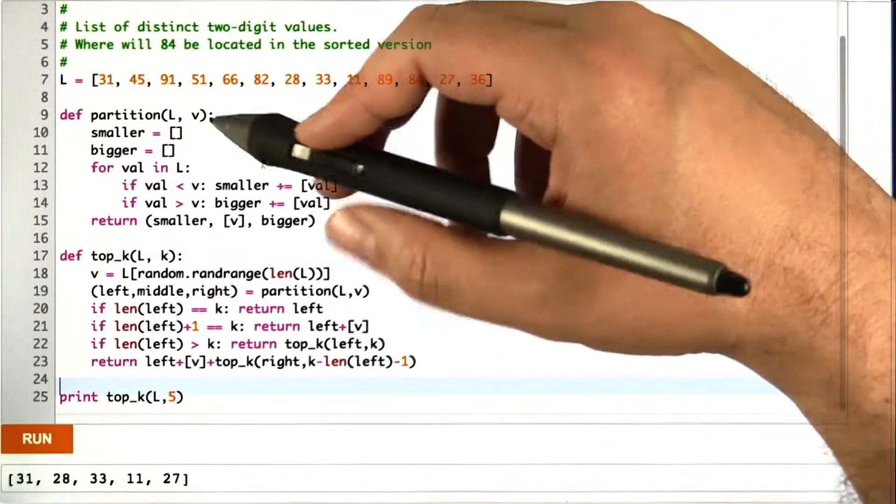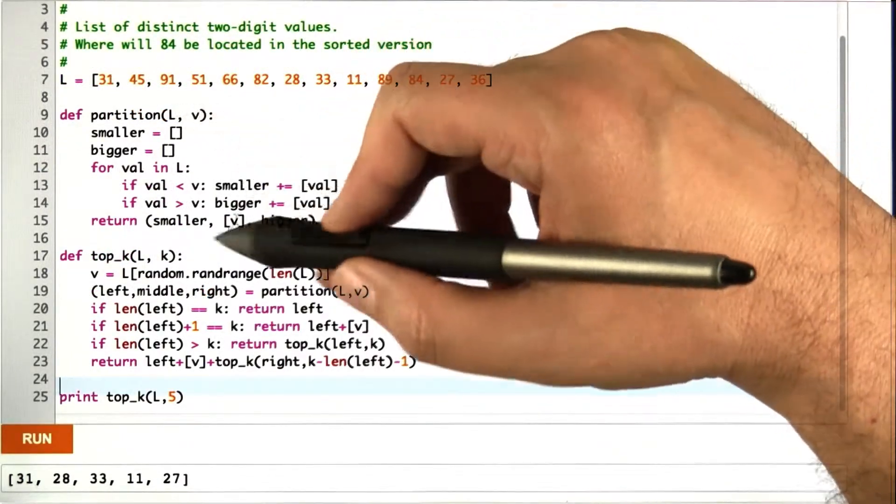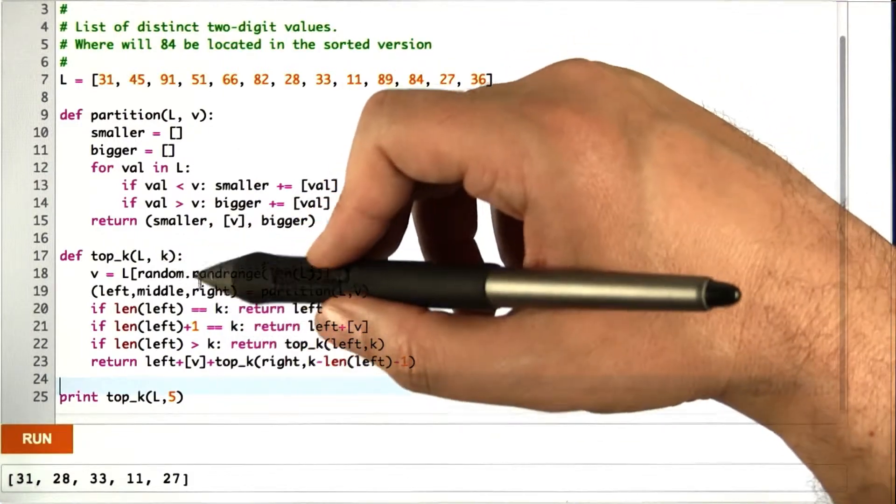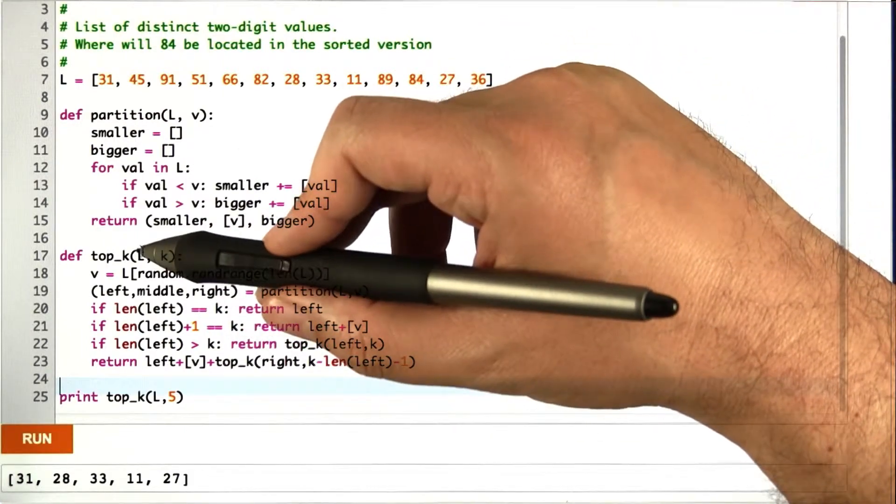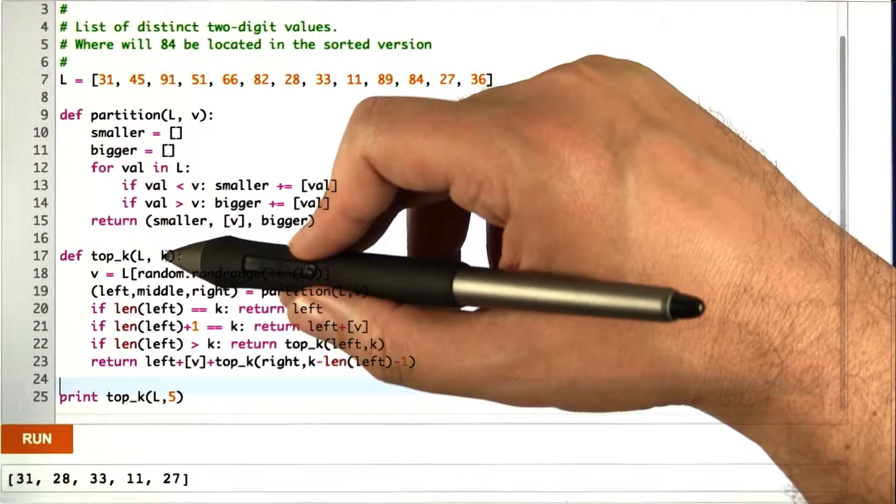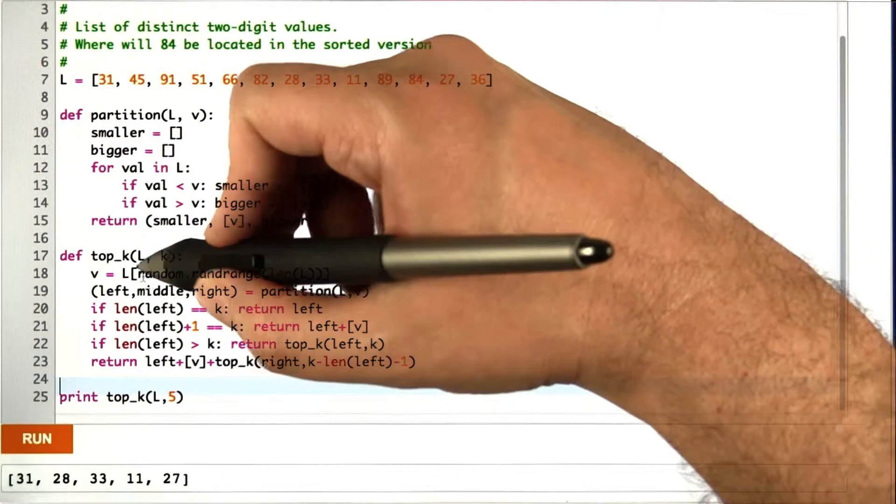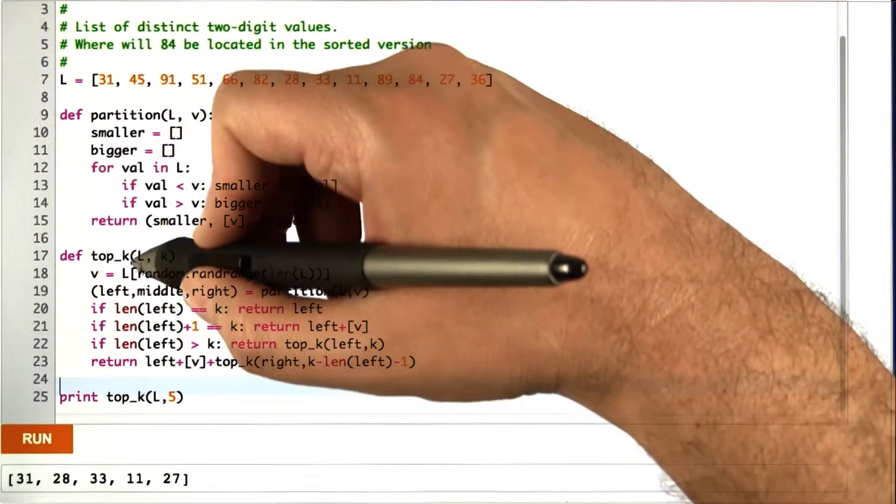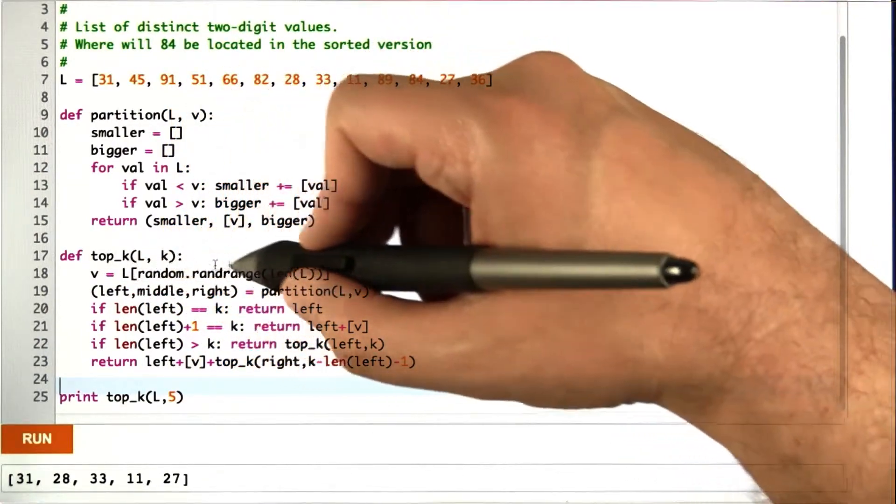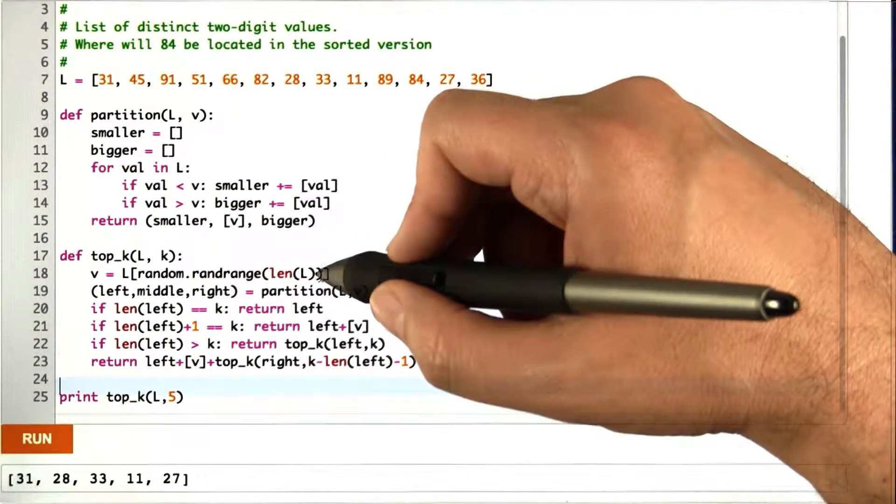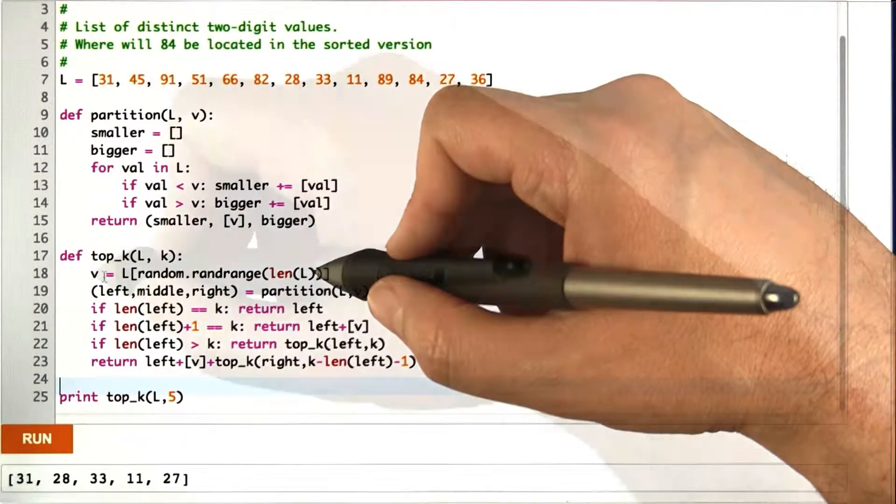All right, so given this modification to partition, we can run top k as follows. We're given a list and some number k that we want the smallest k elements of l. We start off by choosing a random element of l, so we just choose something random in the range of the length of l and call that v.